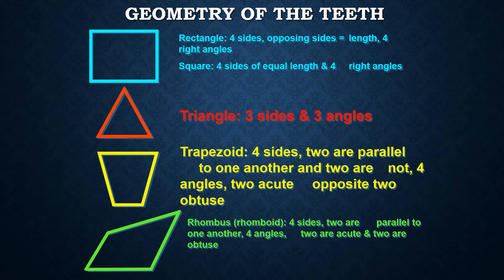In a triangle there are three sides and three angles. In a trapezoid, two sides are parallel to each other while the other two are not, and there are two acute angles and two obtuse angles. A rhombus has four sides where two of them are parallel to each other and two are not, with two acute angles and two obtuse angles.